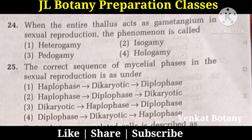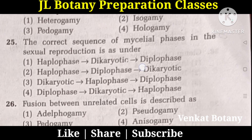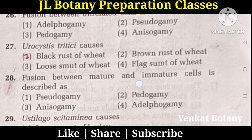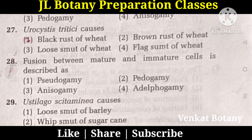The correct sequence of mycelial phases in sexual reproduction is Haplophase, Dikaryotic, Diplophase — option one. Fusion between unrelated cells is described as Pseudogamy. Eurocystis tritici causes Brown rust of wheat. Fusion between mature and immature cells is described as Pedogamy.